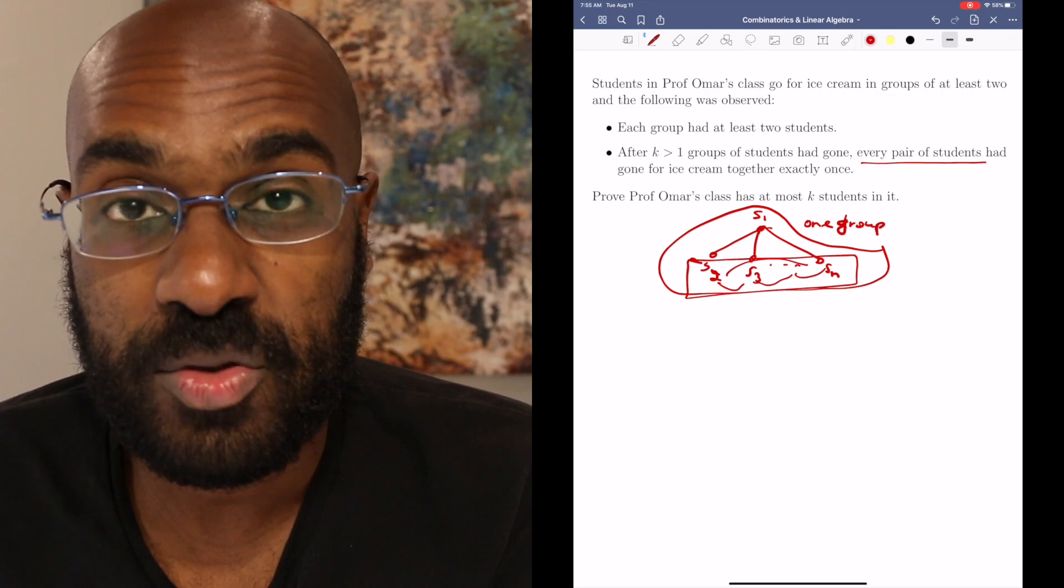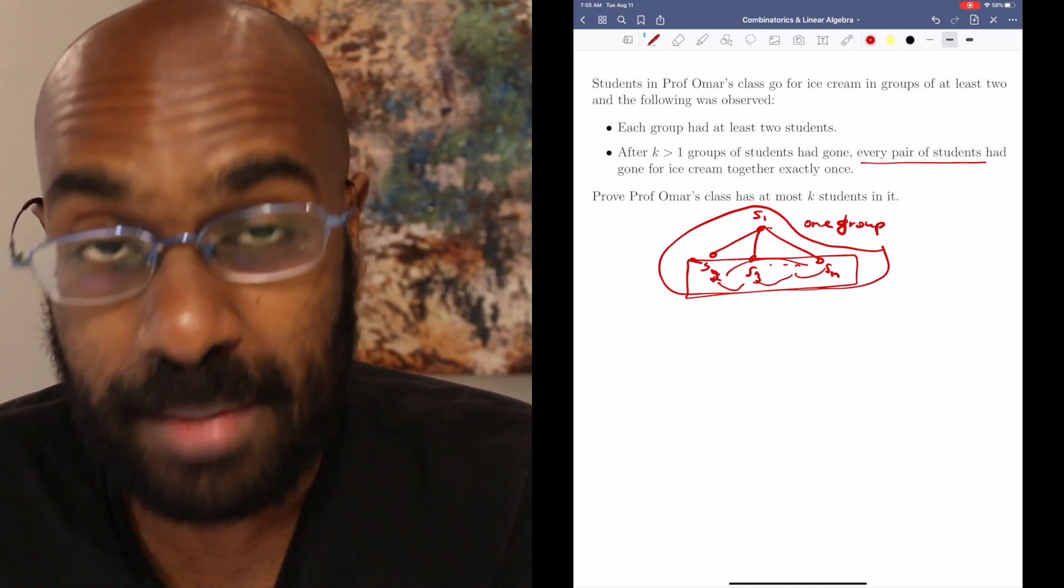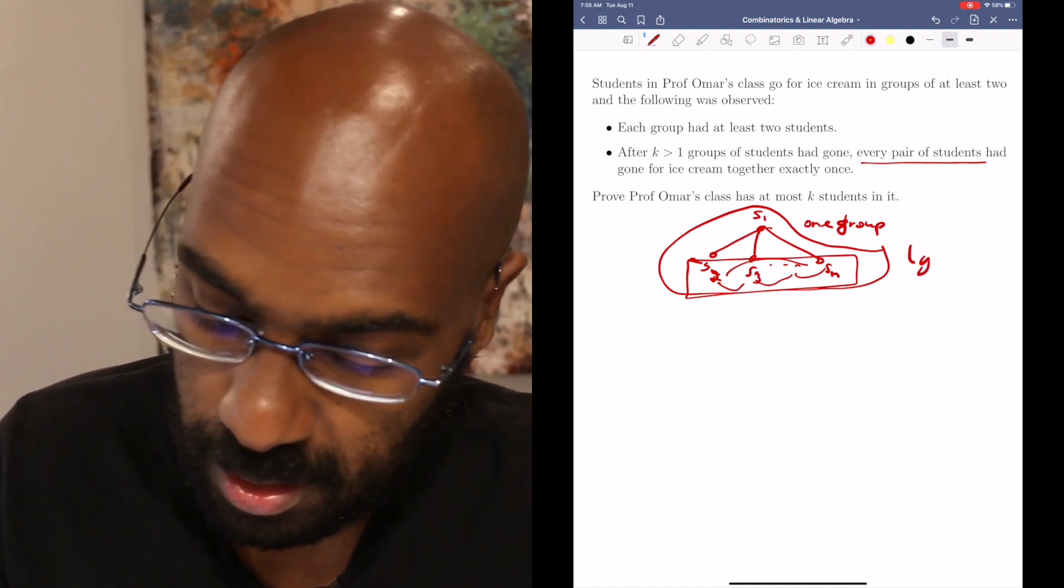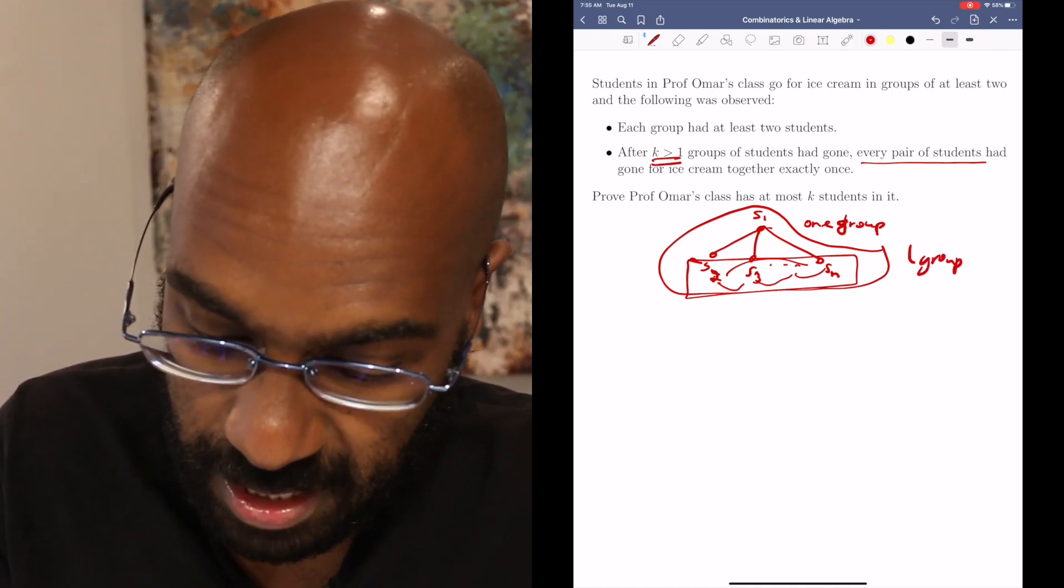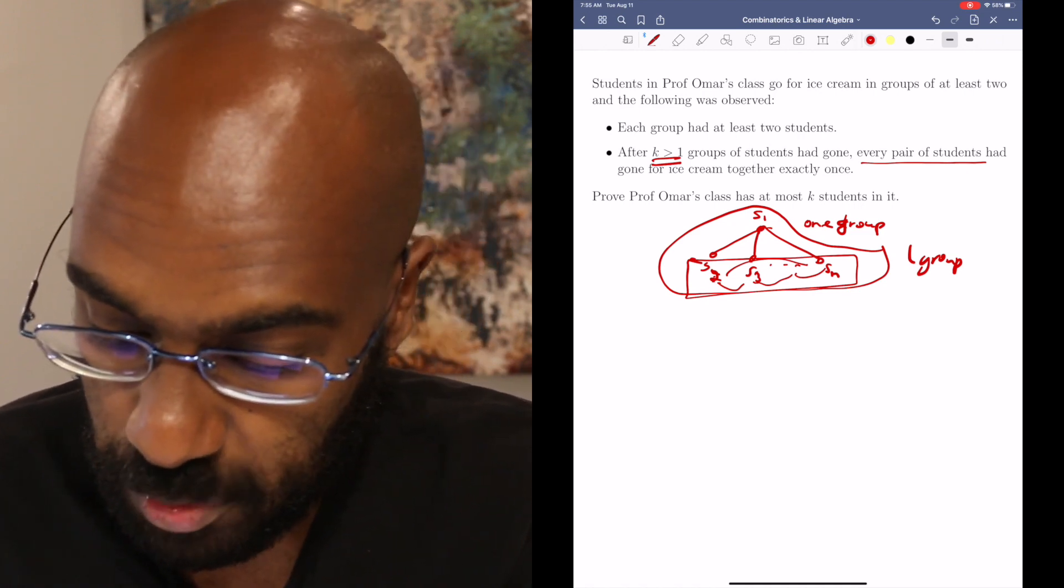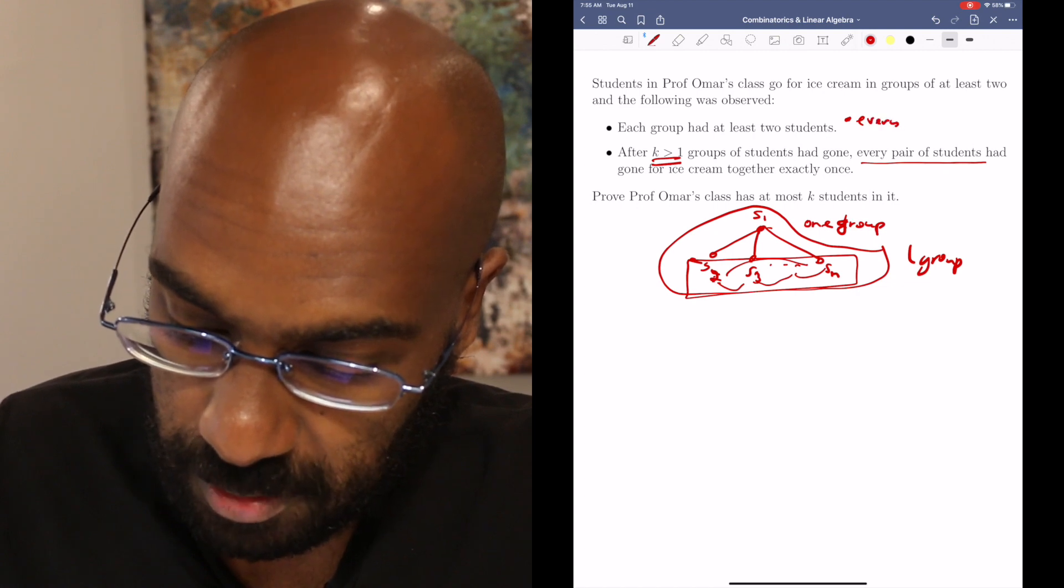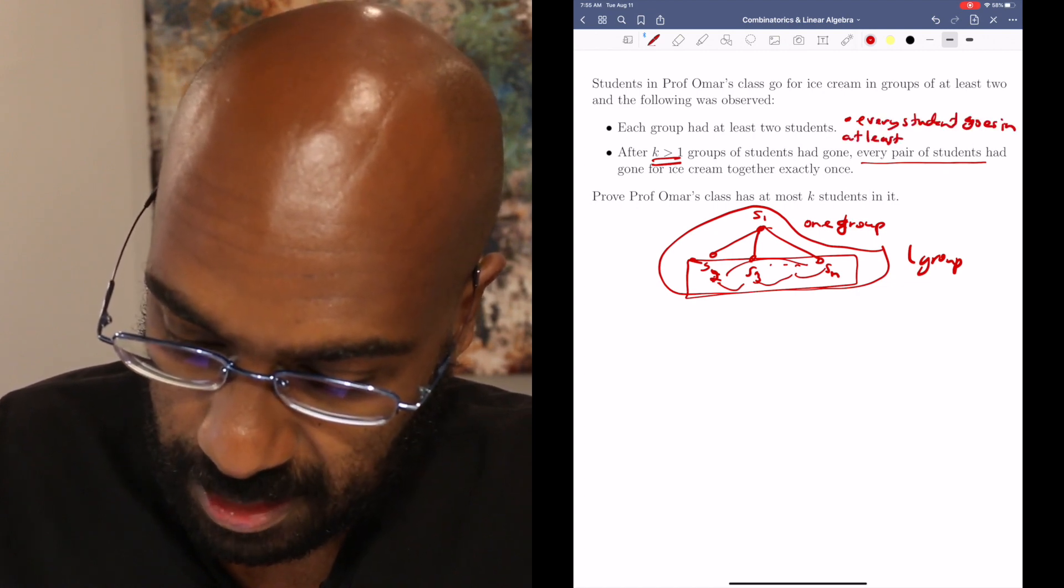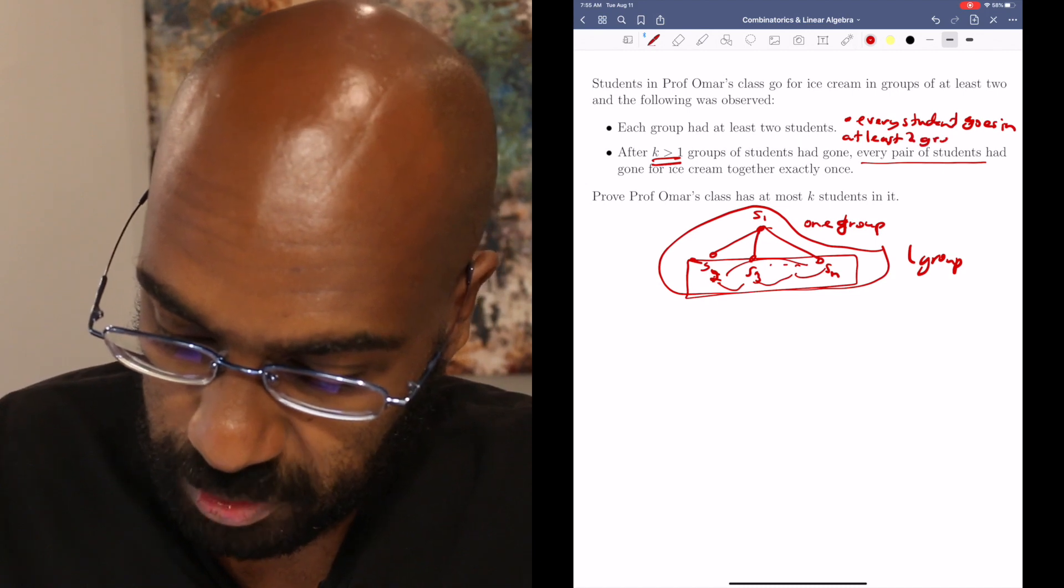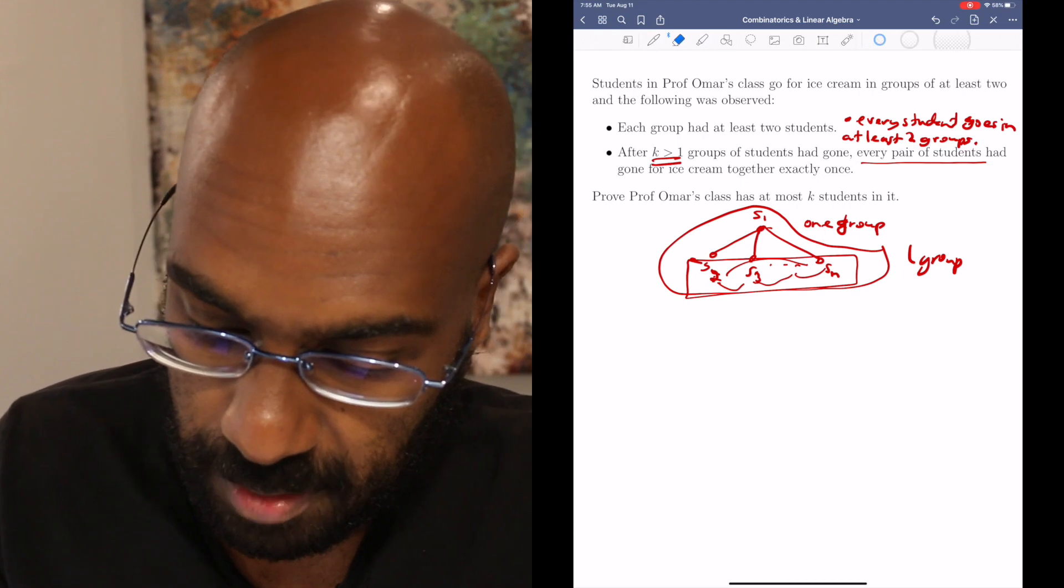Well, that means that the remaining students all went on pairwise the same trip, so there's only one group. But that contradicts the fact that we have at least two groups. So we can add a stipulation here, then, that every student goes in at least two groups. Okay, so that'll become useful to us.